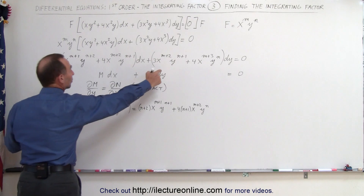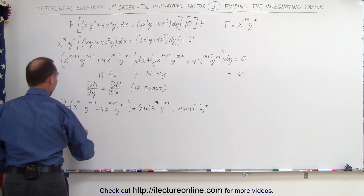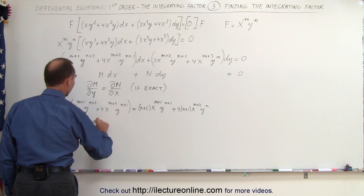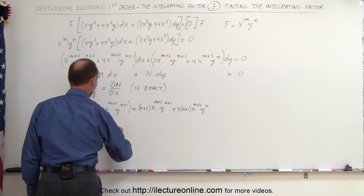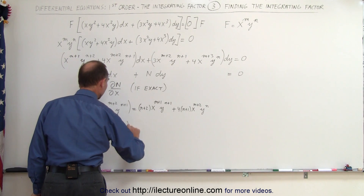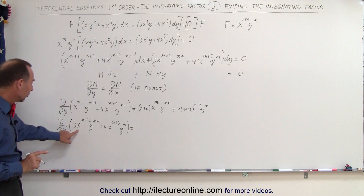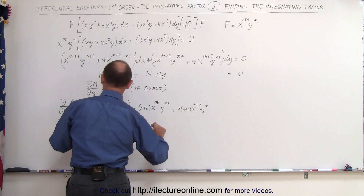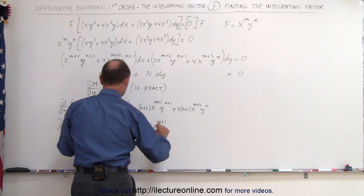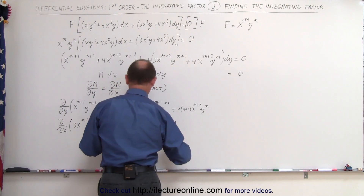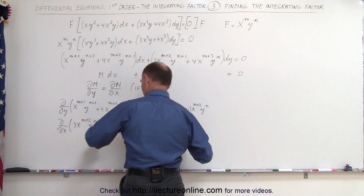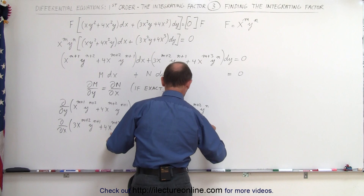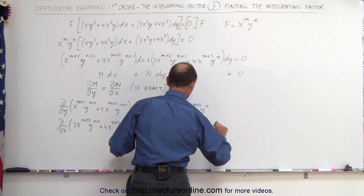Now we do the same for the second quantity. The partial with respect to x of 3x^(m+2) * y^(n+1) + 4x^(m+3) * y^n. In this case y is the constant and x is the variable, so we get 3(m+2) * x^(m+1) * y^(n+1) plus 4(m+3) * x^(m+2) * y^n.